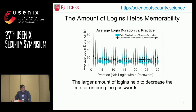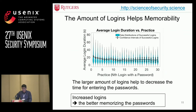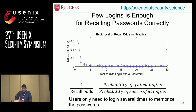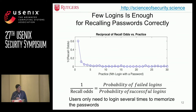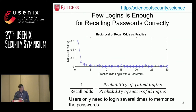Here we examined the influence of the number of login times on password memorability. The figure shows that a larger number of logins helps decrease the time needed for entering the password. The reason is obvious — the more times people log in, the more familiar they become with the password. Regarding recall odds, the reciprocal drops very quickly, and after about five logins it is almost zero. This means that with only a few logins, users are already able to memorize the password well.